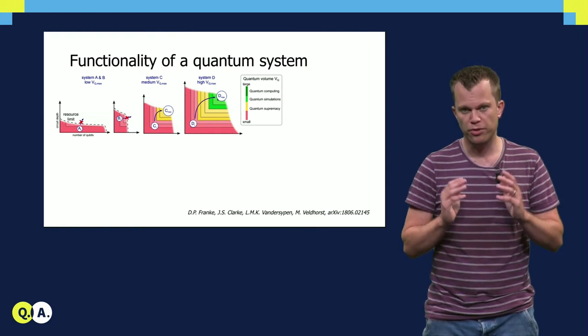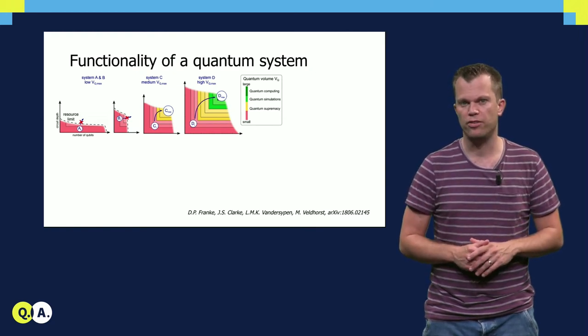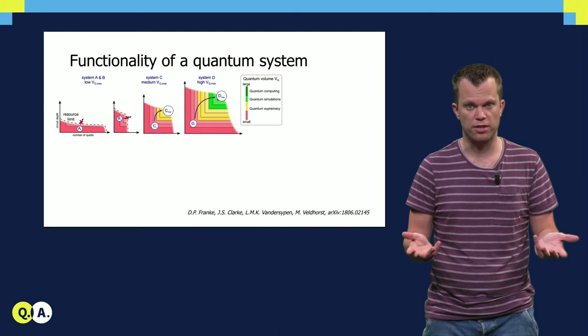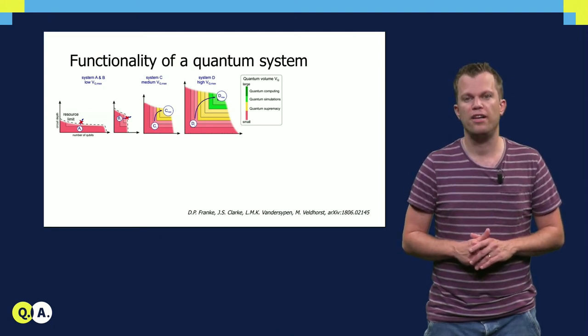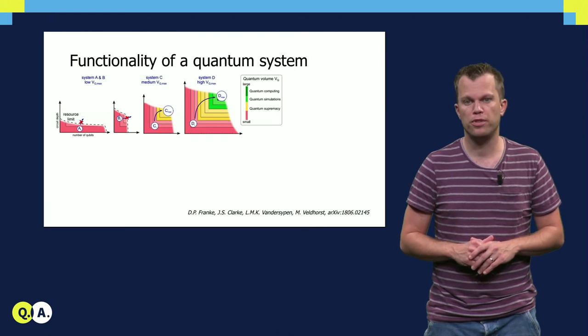Likewise, a system containing many qubits of very low quality is also practically useless. The quantum volume takes this into account and is defined as the square of the lowest number of these two quantities.